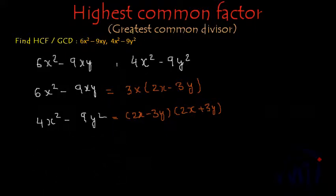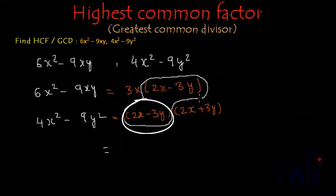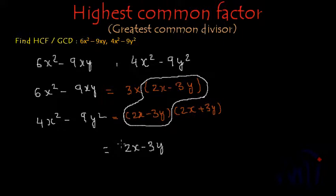We have got the factors of both the expressions and which are the common factors? If we see properly, we have 2x minus 3y over here and we also have one 2x minus 3y over here and nothing else is common. So, common factor is 2x minus 3y. And this is the highest, so the HCF of these two terms is 2x minus 3y.